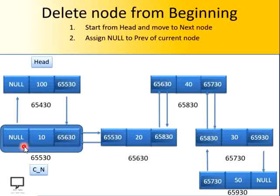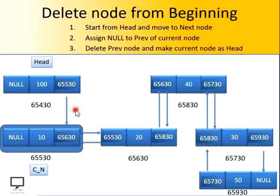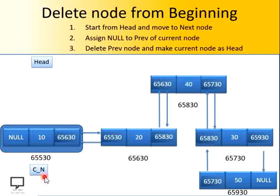After updating it to null, you can observe that we have detached this link. After detaching this link, we can now delete this node. After that, we are going to make this current node the head node. This node is going to become the head node, and your linked list will look like this after deleting the node which is present at the beginning position.